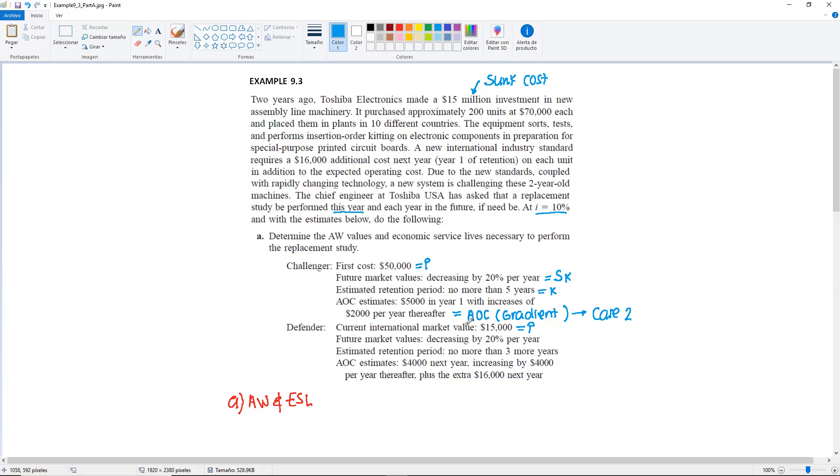So we go with the international market value. That's the price that people would be willing to pay for your asset at this point in time. We have the future market values, which we need to calculate. The estimated retention period is going to be your maximum K. And then we have the annual operating cost, which is $4,000 next year, increasing by $4,000 per year thereafter.